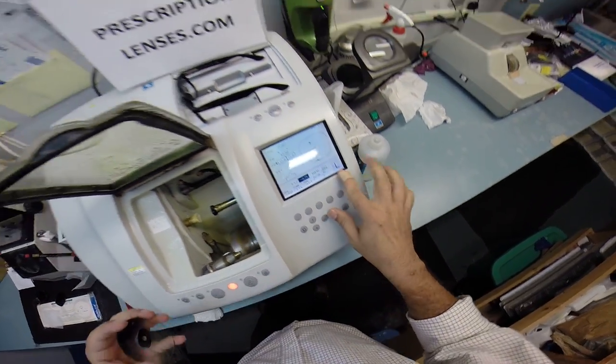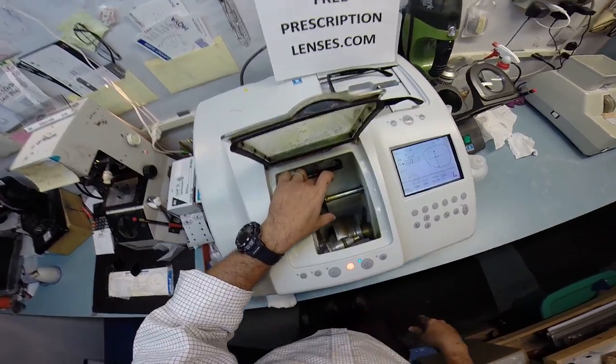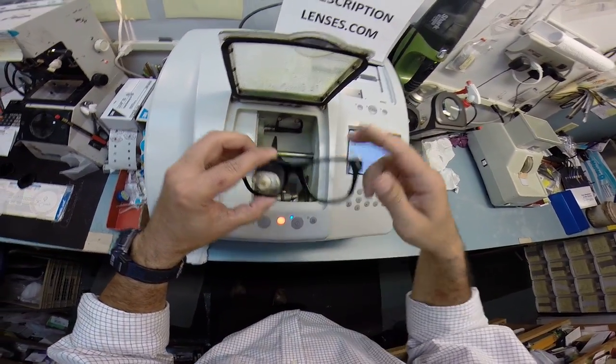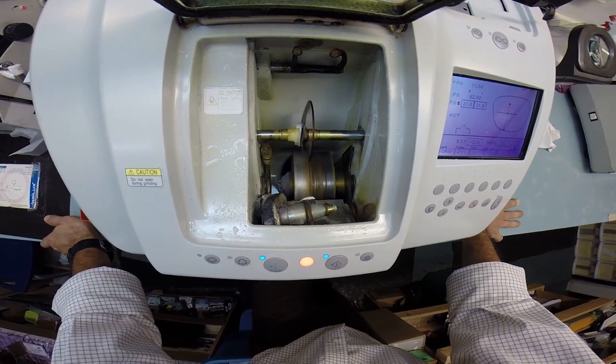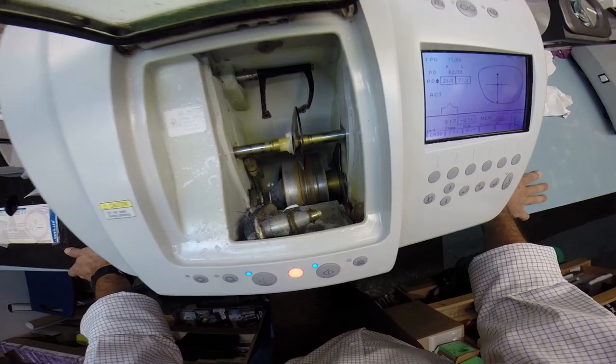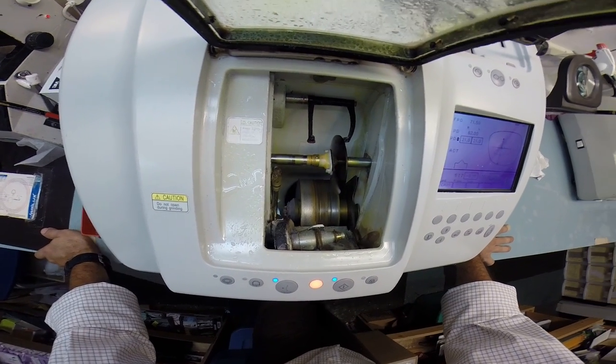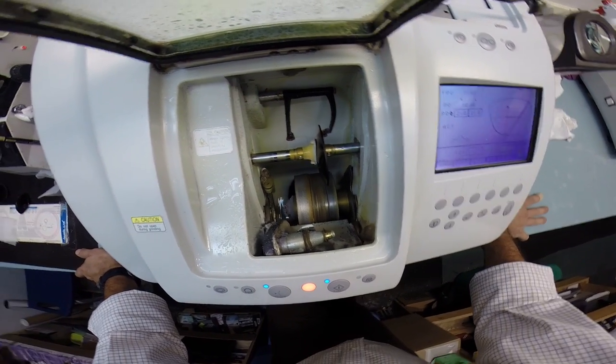Flip that, make the R and L and hit start. And just like before, the caliper is going to come down, but this time they're going to trace the shape of the left side of the frame to make sure the lens is large enough to fit. Always starting with the concave rear surface and then it's going to move over and trace the convex front surface. And that concludes your vocabulary lesson of the day.